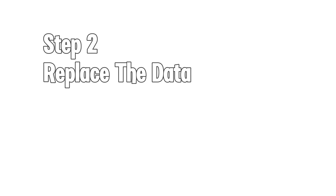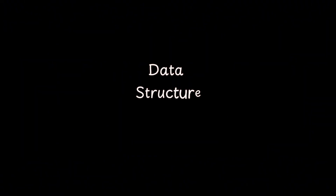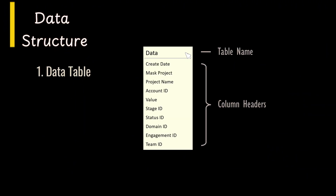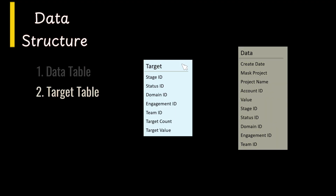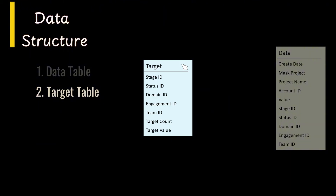Before getting to the Excel dataset, here's a quick overview of the data structure. The first table contains your main opportunity data, including fields like create date, mask project, project name, account ID, value, and the dimension keys for stage, status, domain, engagement, and team. The second table, target, stores the target data using the same dimension fields, along with each group's target opportunity count and value.